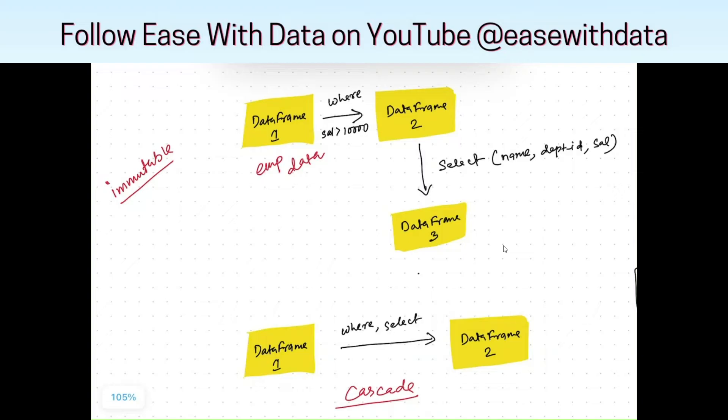Now to understand with an example, consider we had employee data which we read into a data frame. Now we had to filter the data where the salary is greater than 10,000. So we can create one more data frame out of this first data frame. Now we had to select only name, department ID, and salary from the second data frame. So we can create a third data frame.